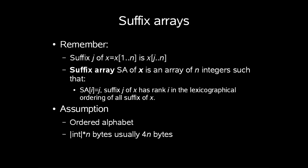If you remember from our earlier videos, a suffix j of x equals x of length n is a subsequence of the string starting from j to n. A suffix array SA of x is an array of n integers, such that SA of i equals j. This means that our suffix j of x has rank i in the lexicographical ordering of all suffixes of x, which we'll get more into.